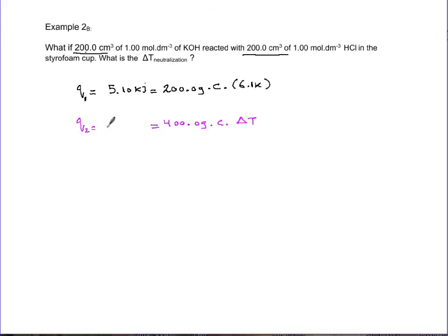It takes 5.1 kilojoules to change temperature of 200, then it should be twice as much to change temperature of 400. Therefore, ∆T is identical as before. So ∆T is 6.1 degrees Celsius.